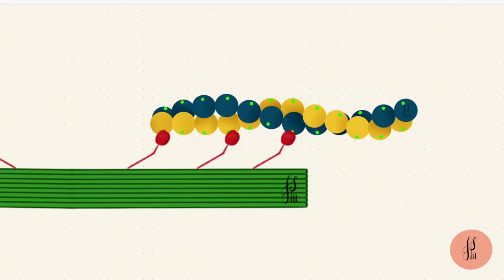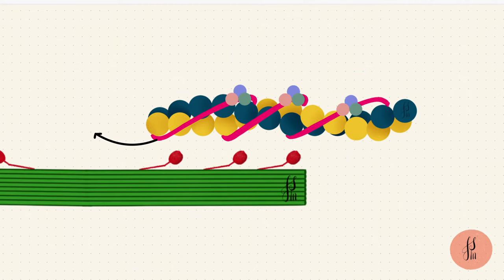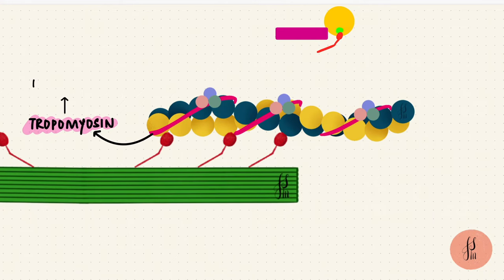These binding sites on the actin filament are usually covered by tropomyosin. So it prevents actin and myosin from attaching. Only if tropomyosin is moved out of the way can actin and myosin bind. So it's a regulatory protein and it forms a part of the thin filament.